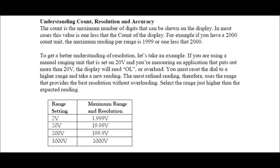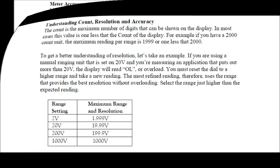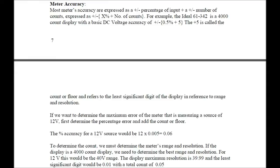Range settings and their maximum resolutions: 2V range gives 1.99V resolution; 20V range gives 19.99V; 200V range gives 199.9V; and 1000V range gives 1000V. Meter accuracy is expressed as plus or minus a percentage of input plus a number of counts — for example, plus or minus X% plus a count. The Ideal 61-342 is a 4000-count display with a basic DC voltage accuracy of ±0.5% plus 5. The 'plus 5' is called the count or floor and refers to the least significant digit of the display.